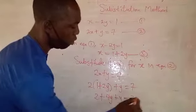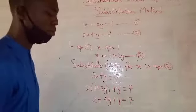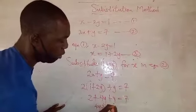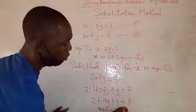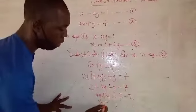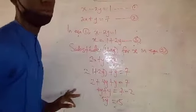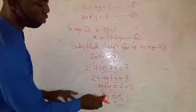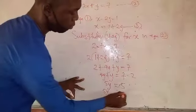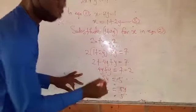Opening the bracket: 2 times 1 gives 2, and 2 times 2y gives 4y, so we have 2 plus 4y plus y equals 7. Collecting like terms — variables on the left, constants on the right — 4y plus y gives 5y, and 7 minus 2 gives 5. So we have 5y equals 5. Dividing both sides by 5 gives y equals 1.